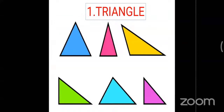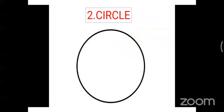Which shape is this? Triangle! How many sides do you see? Three. Triangle has three sides. Okay, now see the next picture. Which shape is this?